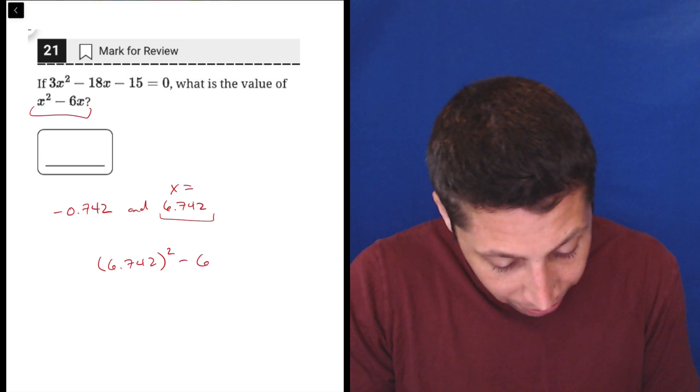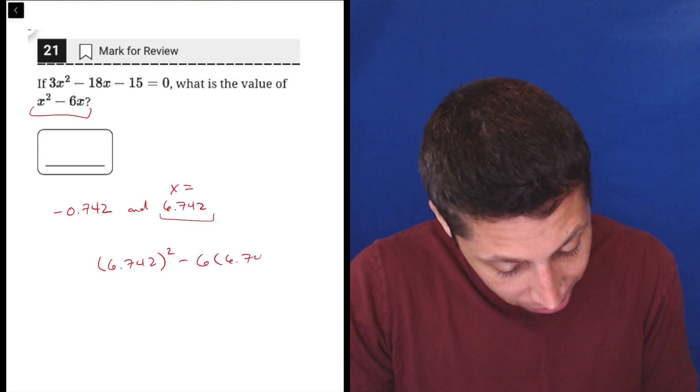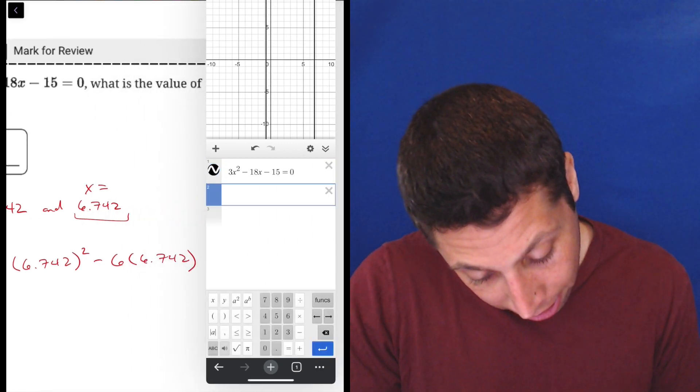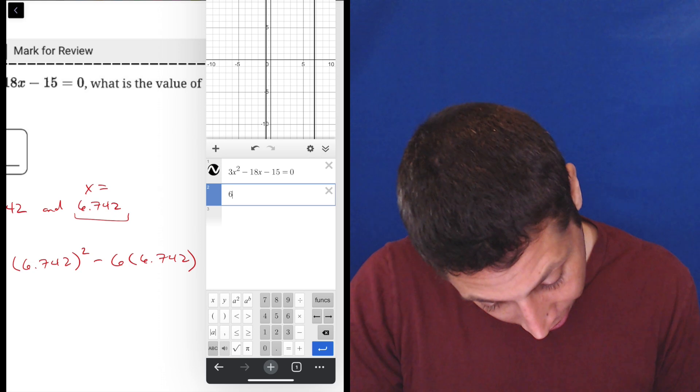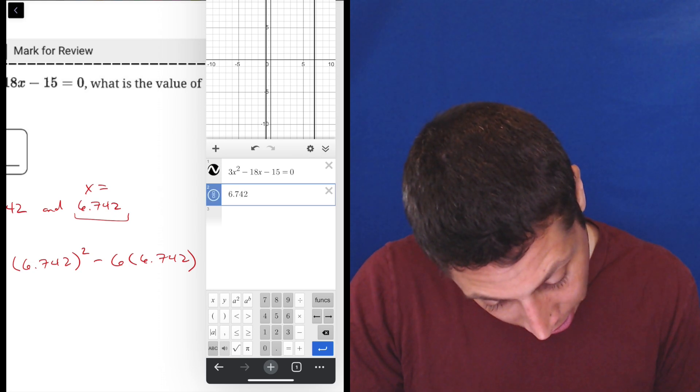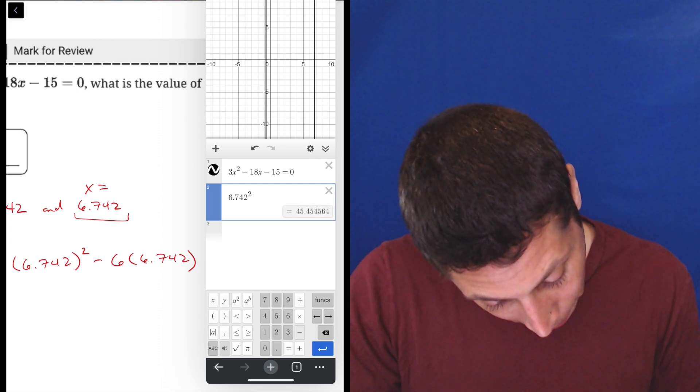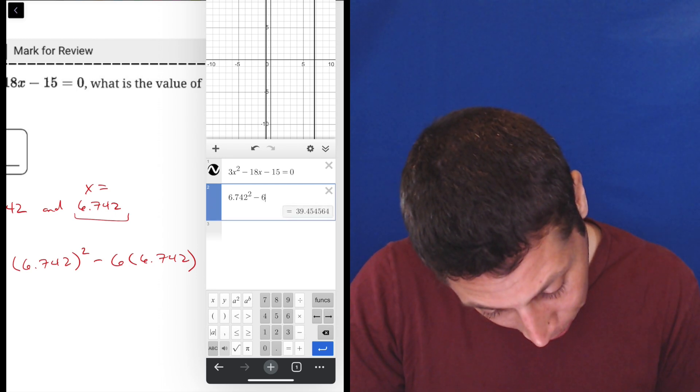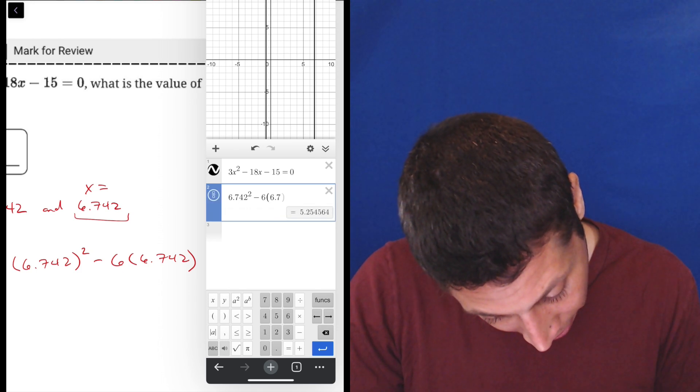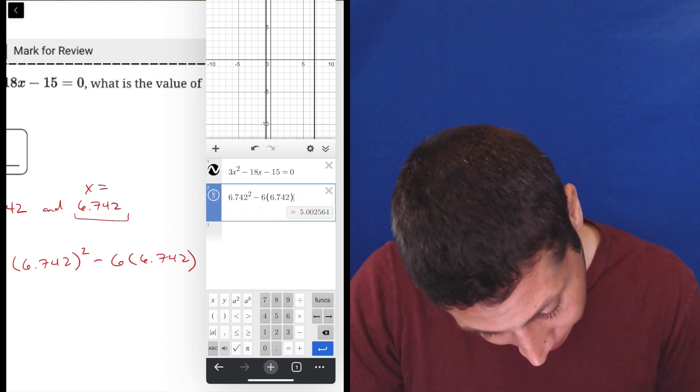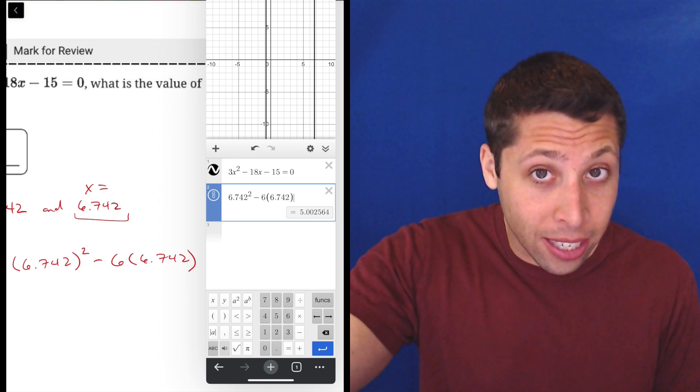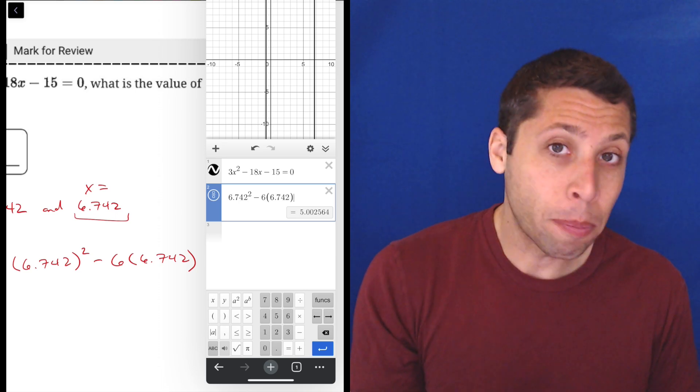So x² is 6.742² minus 6 times 6.742, and here's where I'd let the calculator do the work for me again. So let's just put that in: 6.742² minus, in parentheses, times 6.742.